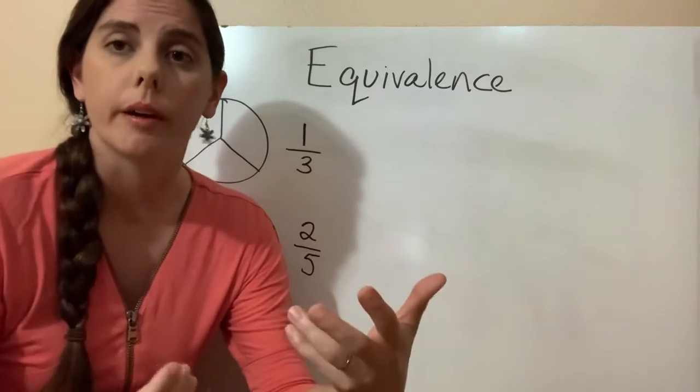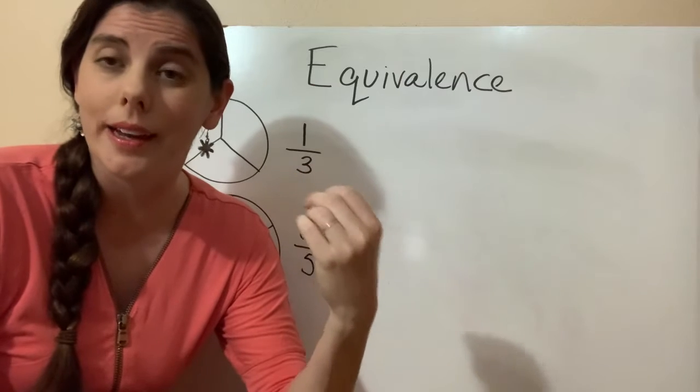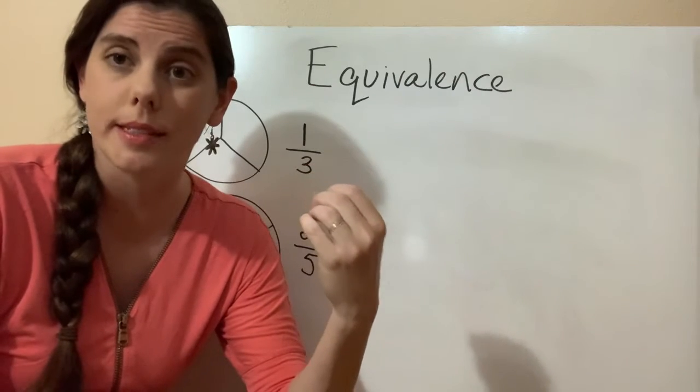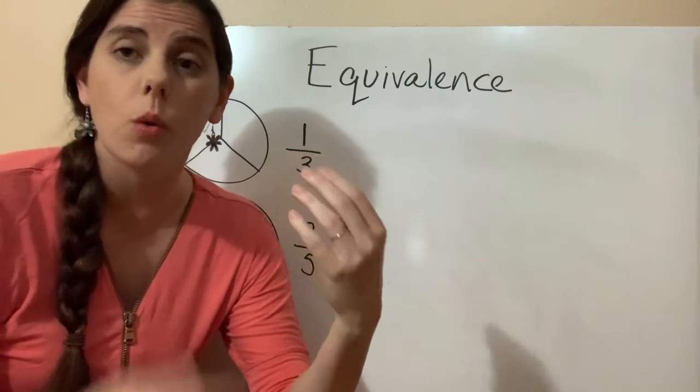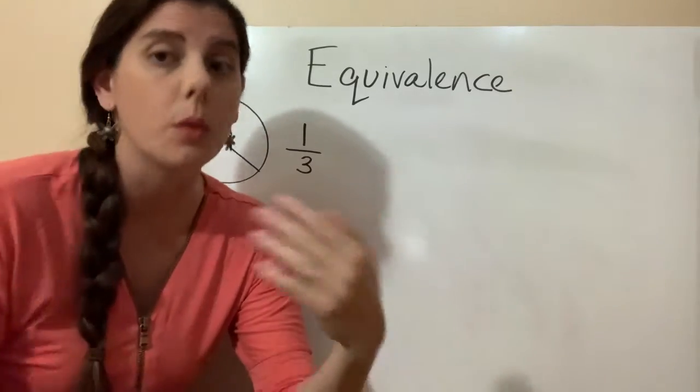So how do we do that? Well, think back to our properties of equality and our algebra concepts. Our properties of equality says whatever you do to one side of the equal sign, you do to the other.